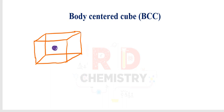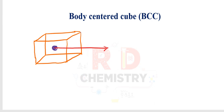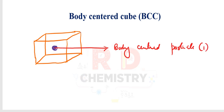The next one is the body-centered cube (BCC). In the BCC, there is a particle right at the center of the cube — this is called the body-centered particle. There is only one such particle, and it is not shared, so its contribution is 1 × 1 = 1.